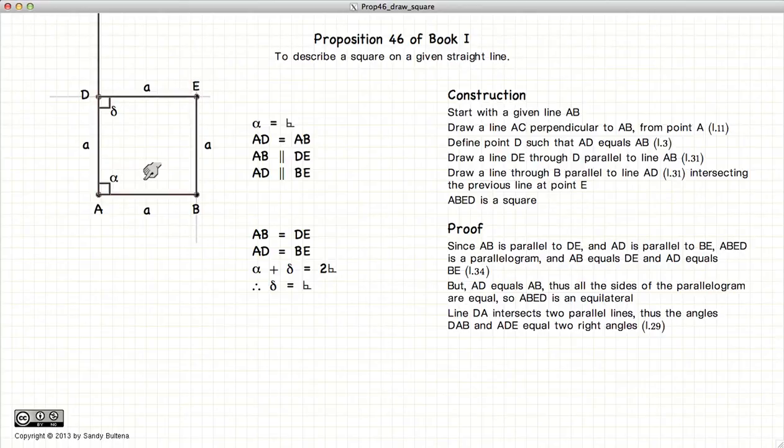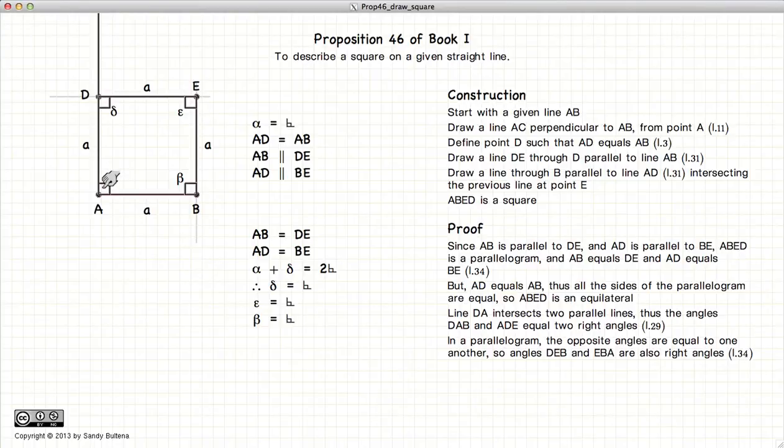Now from parallelograms, we also know that the opposite angles are equal. So alpha would equal epsilon, i.e. right angle, and delta would equal beta, also a right angle.